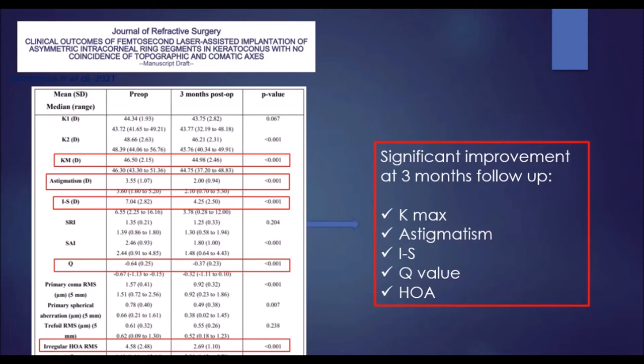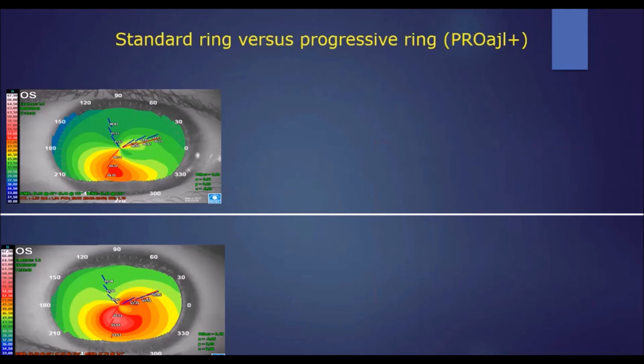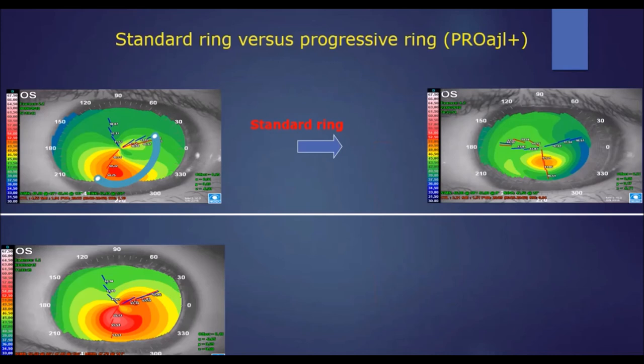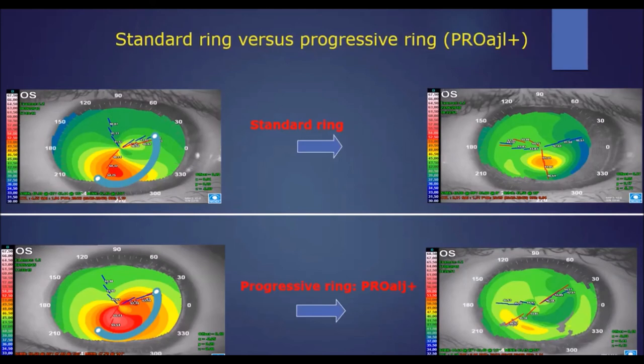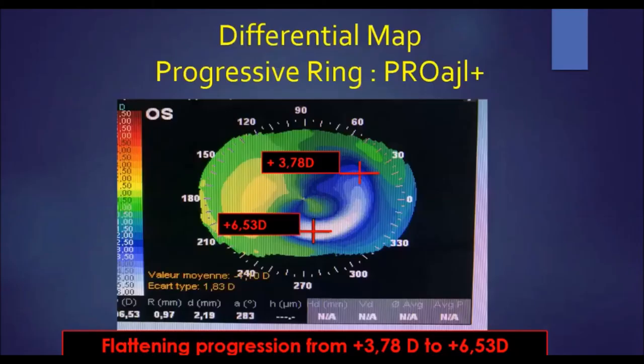In my point of view, these new progressive segments are much more interesting than basic ones in cases of asymmetric keratoconus. Two examples of duck morphology illustrate this: the first treated with a basic ring shows the astigmatism was treated but not the coma aberrations, with steepening remaining in the inferior part. The second, treated with progressive rings, shows better post-operative topography with both astigmatism and coma corrected.